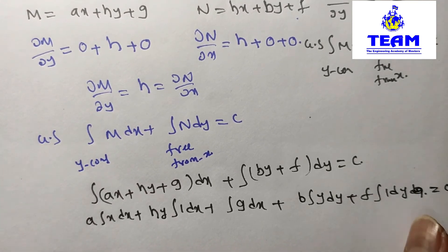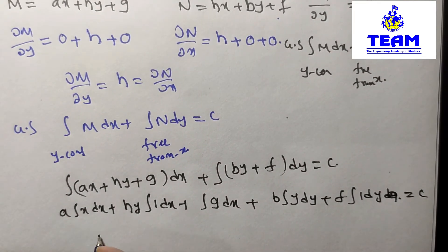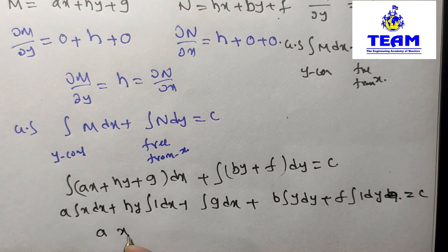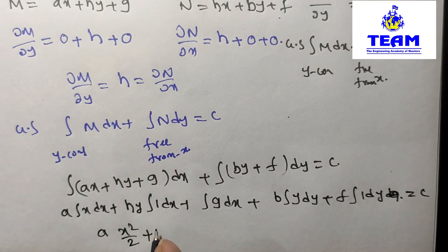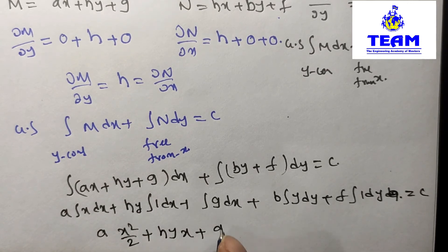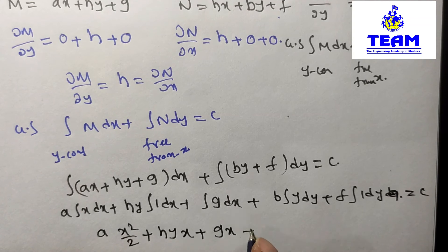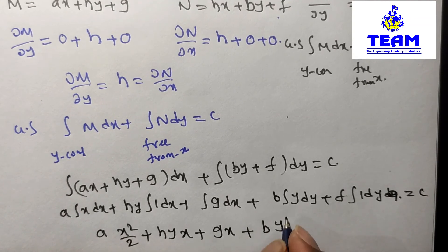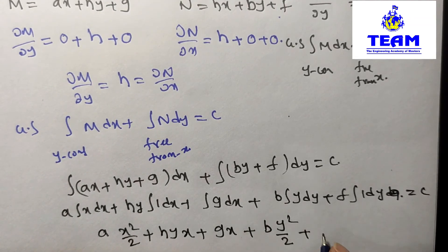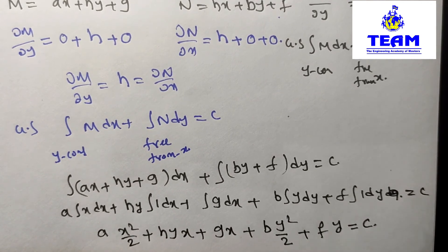Now a times x integration is x squared by 2, plus hyx plus g times x, plus b times y integration is y squared by 2, plus f times y, which equals C.